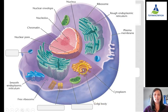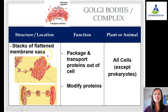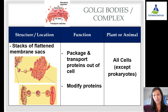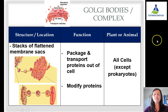Golgi bodies can be differentiated from the ER because they are farther away from the nucleus. They are stacks of flattened membrane sacs. Their job is to package and transport things out of the cell, modify proteins, and they can also be the location of lipid or fat production. All cells except prokaryotes have Golgi bodies.